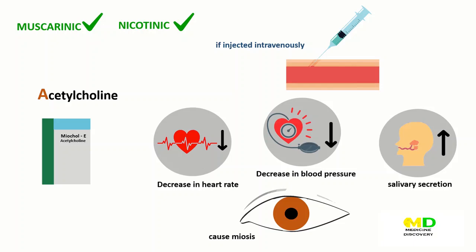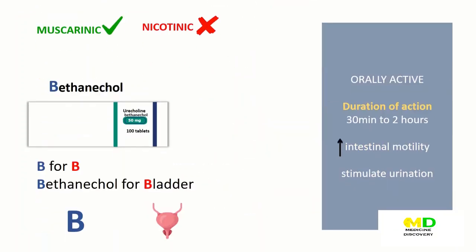Bethanechol lacks nicotinic actions but does have strong muscarinic activity. It is resistant to cholinesterase and orally active, with a duration of action of 30 minutes to 2 hours. In urologic treatment, Bethanechol directly stimulates muscarinic receptors, causing increased intestinal motility. It also stimulates the detrusor muscle of the bladder, which stimulates urination. Remember: Bethanechol acts on the bladder — it contracts the urinary bladder in urinary retention. Therefore, it is B for B: Bethanechol for bladder.